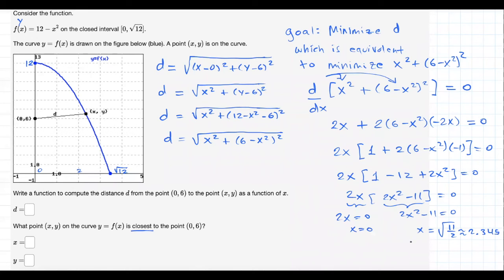All right. Now, these are the two candidates, right? So how am I going to know which one is the one that will lead to the minimum distance between these two points? Well, let's evaluate each of these guys, 0 and 2.345, into our distance function, what we got here.